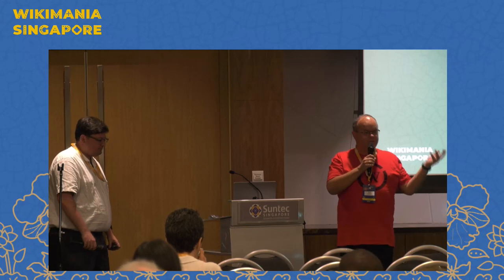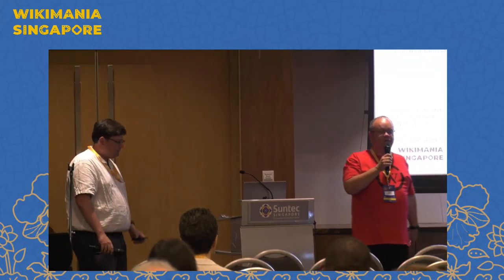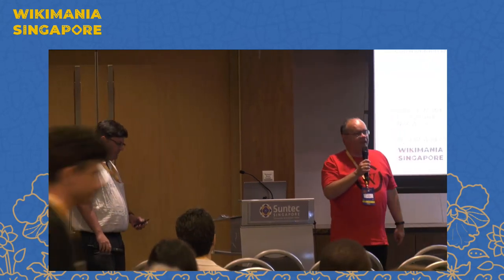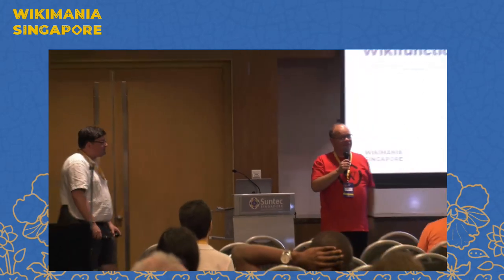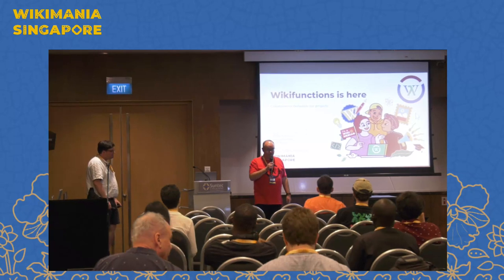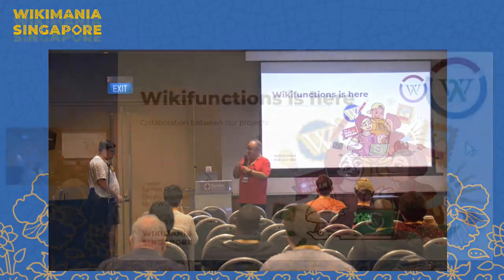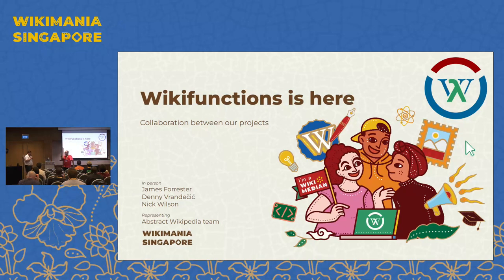I'm Denny Vrandicic. I'm head of special projects at the Wikimedia Foundation — still trying to figure out what it means. One thing I do is work on the Wikifunctions and Abstract Wikipedia project. With me today is James Forrester. I'm James Forrester, working also on Abstract Wikipedia and Wikifunctions. I'm tech lead for that team.